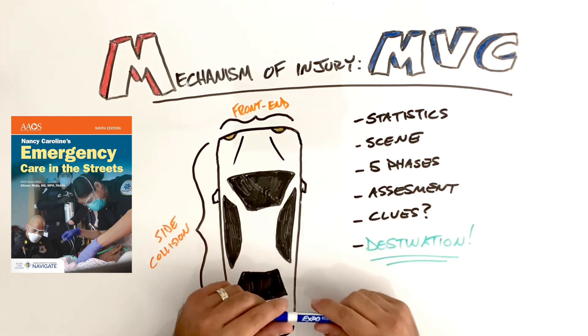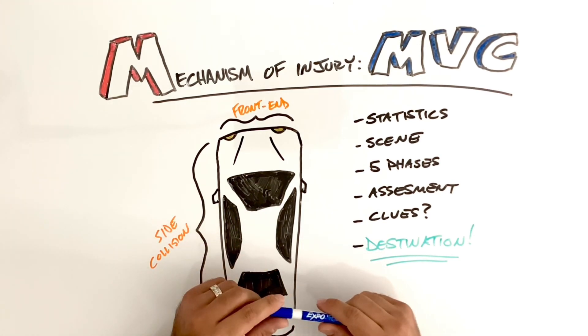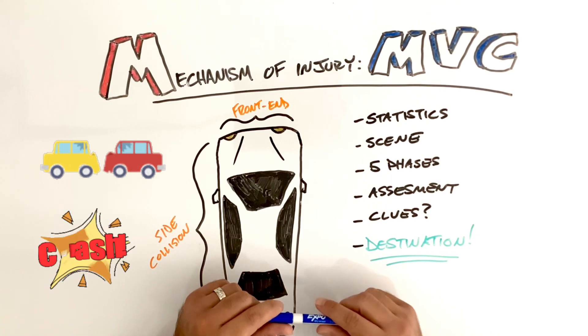Welcome back, Titans. Today we are talking Mechanism of Injury, or MOI, for the acronym of MVCs, Motor Vehicle Collisions.